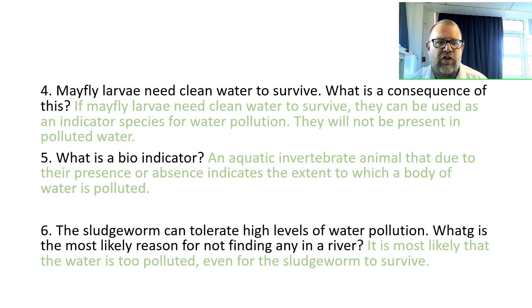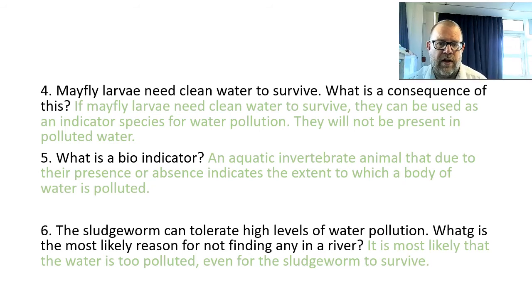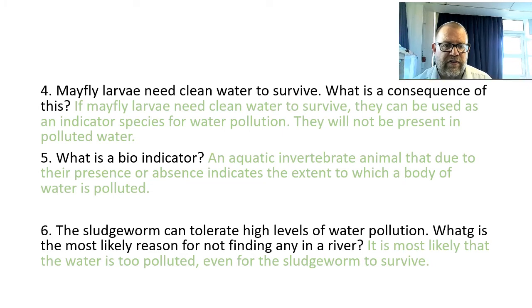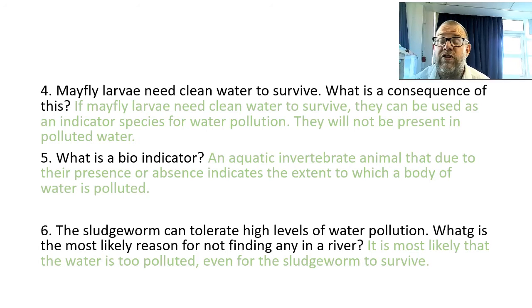Mayfly larvae need clean water to survive, so they can be used as indicators of water pollution — they will not be present once the water starts getting polluted. A bioindicator is an aquatic invertebrate animal whose presence or absence indicates the extent of pollution. The sludge worm can tolerate high levels of water pollution, so if you see sludge worms, the most likely reason for not going in the river is that the water is too polluted.